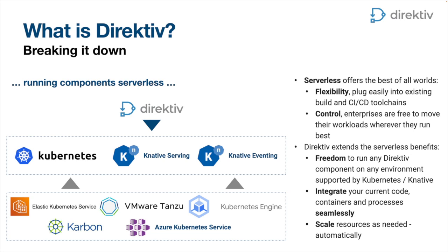Everything about Directive is serverless. We run on top of all the basic Kubernetes platforms and services. We chose the serverless framework because of the freedom it gives us to run it anywhere — in any environment, public or private cloud. There are really good resources for integrating code, containers, and processes seamlessly, and the ability to scale resources in and out automatically, which is managed by Kubernetes. We use Knative serving and Knative eventing — Knative eventing for the event sources, Knative serving to stop and start containers in the Kubernetes platform.